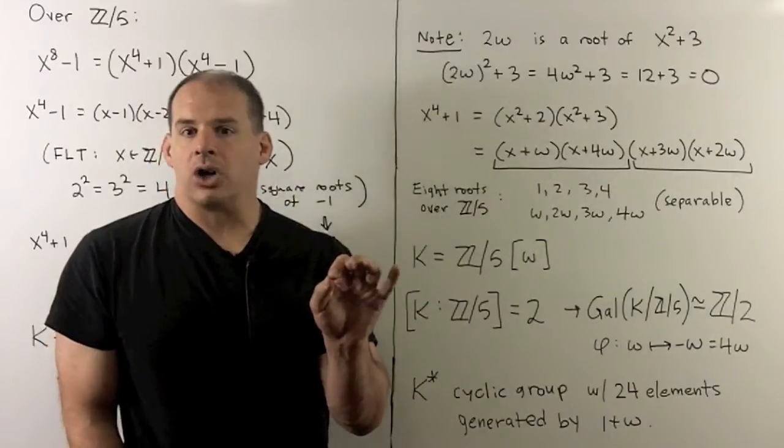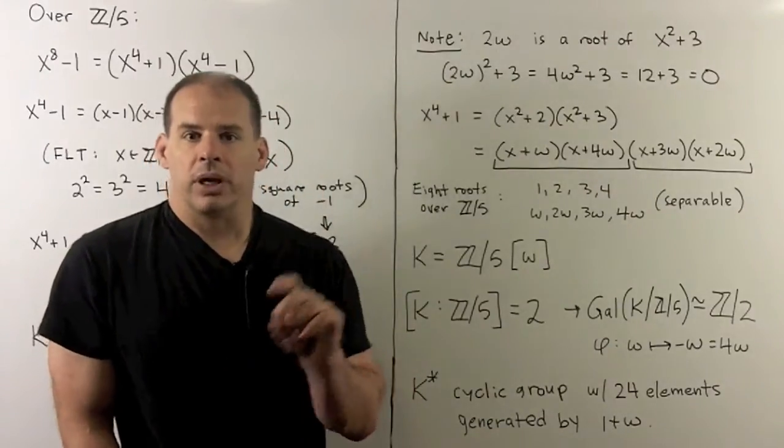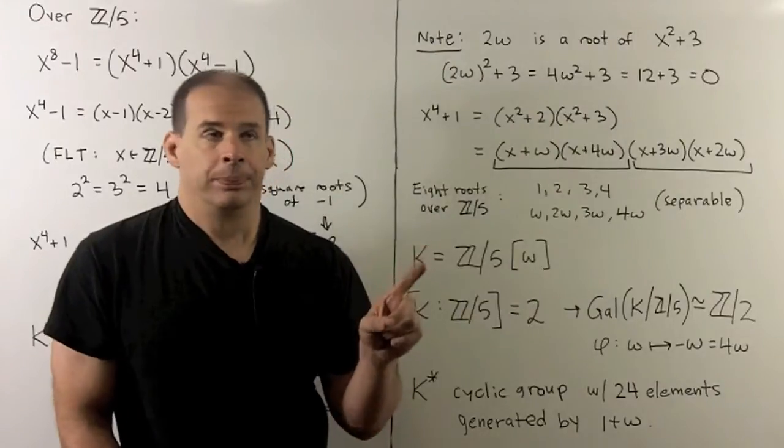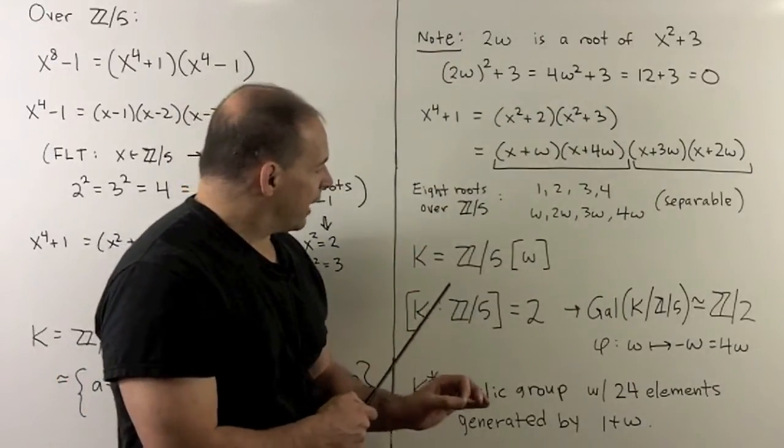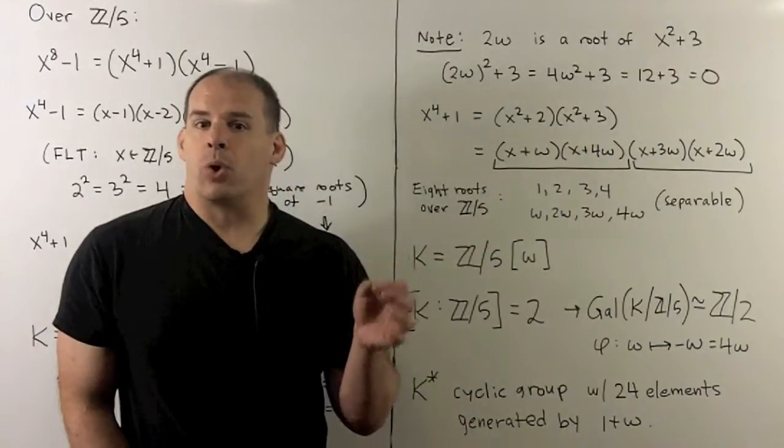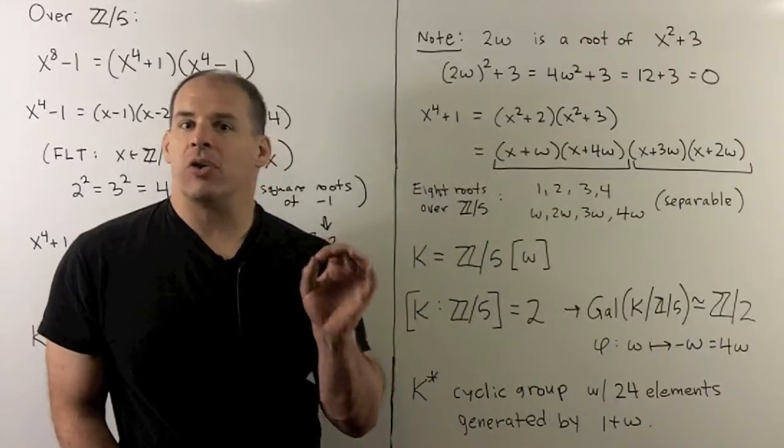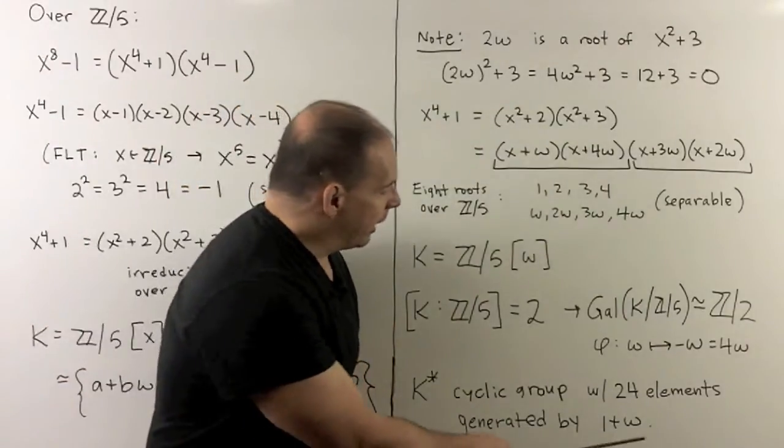Now, no Galois correspondence here. There's no intermediate fields. And we note, we're called in a finite field. Here I have a finite field of 25 elements. That means the non-zero elements are going to form a cyclic group of order 24. And I'll leave it you to verify that this cyclic group is generated by the element 1 + ω.